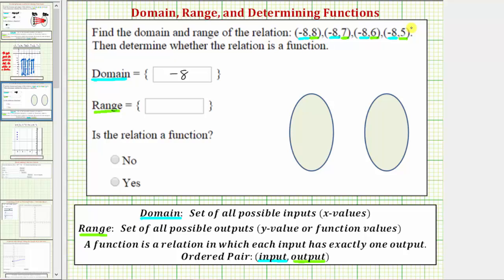But we should give the values in order from least to greatest. So the range is five, six, seven, eight. And notice how when given the domain and range, we should include the values in braces, which are already provided for us.